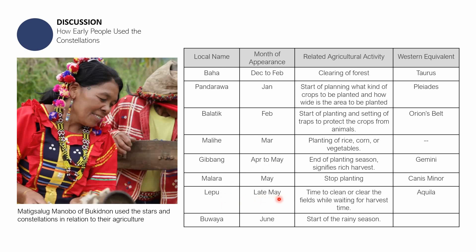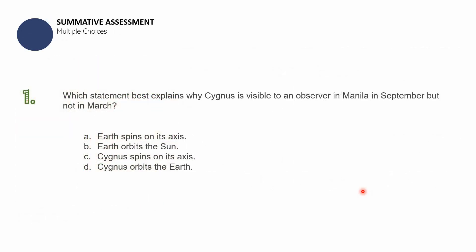When Lepu appears in late May — which is equivalent to Aquila, the eagle of Zeus — it is an indication to clean and clear the fields while waiting for harvest time. This is how our fellow Filipinos used the stars and constellations, and even our communities today still reference these patterns in the sky.